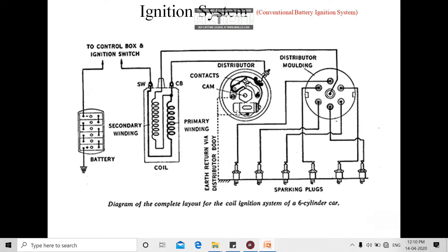Hello class, till here we have completed the construction and working of conventional battery ignition system, and we've gone through the different phases of ignition system that need to be completed: ionization, arc formation, and arc suspension. Now on this slide we can see a schematic diagram of the conventional battery ignition system.